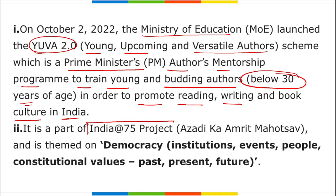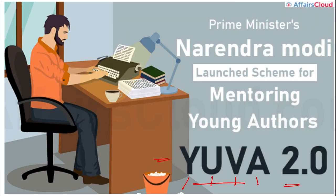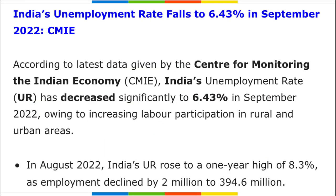YuVA 2.0 was a part of the India@75 project — Azadi Ka Amrit Mahotsav — with the theme of democracy, institutions, events, people, constitutional values, past, present and future. This scheme will be implemented by the National Book Trust of India under the Ministry of Education. Key point: launched by PM Narendra Modi for mentoring young authors below age 30.